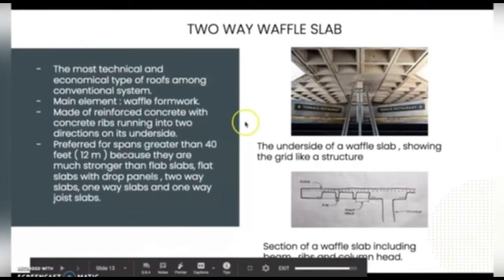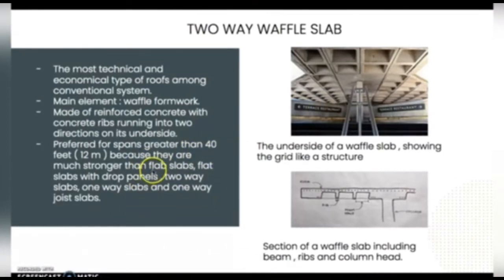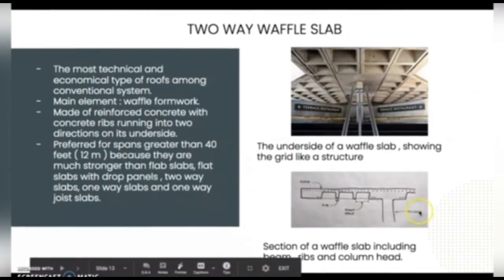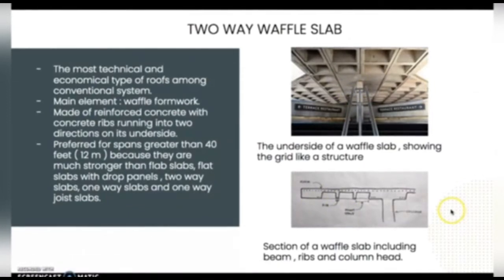The two-way waffle slab is preferred for spans greater than 40 feet, which is 12 meters, because they are much stronger than flat slabs, flat slab with drop panels, two-way slabs, one-way slabs, and one-way joist slab. This is the underside of a waffle slab showing the grid-like structure. And this is the section of a waffle slab including beam, ribs, and column hat.